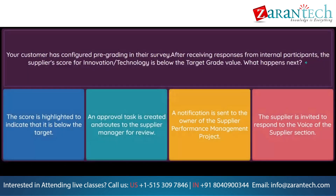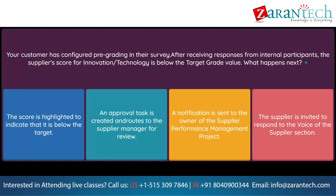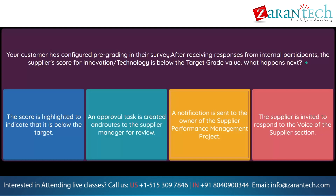Question. Your customer has configured pre-grading in their survey. After receiving responses from internal participants, the supplier's score for Innovation/Technology is below the target grade value. What happens next? Option 1: The score is highlighted to indicate that it is below the target. Option 2: An approval task is created and routes to the supplier manager for review. Option 3: A notification is sent to the owner of the supplier performance management project. Option 4: The supplier is invited to respond to the Voice of the Supplier section.